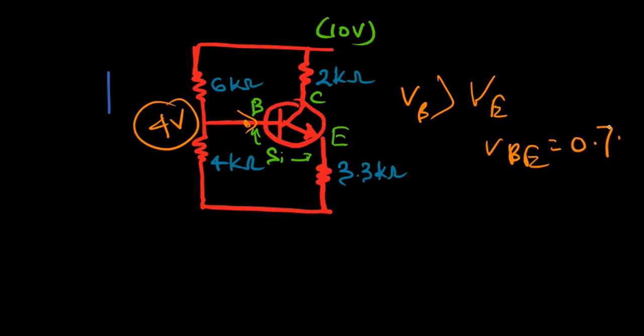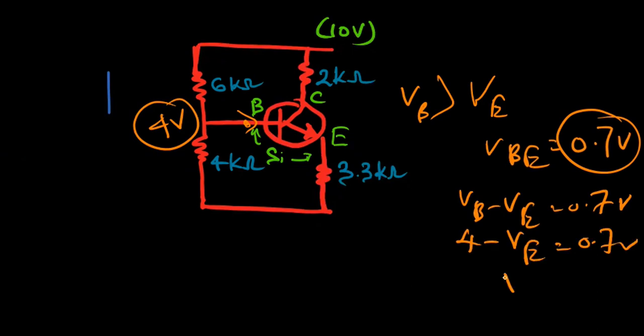We have found VB, so VB minus VE equals 0.7 volts. Here 4 minus VE equals 0.7 volts, then VE equals 4 minus 0.7, that is 3.3 volts.